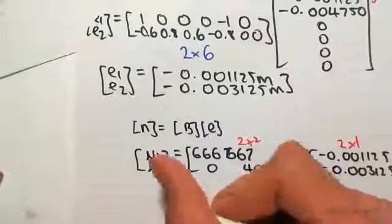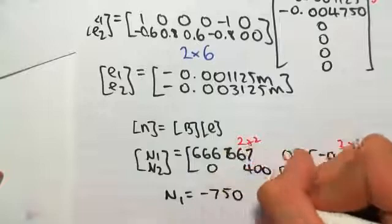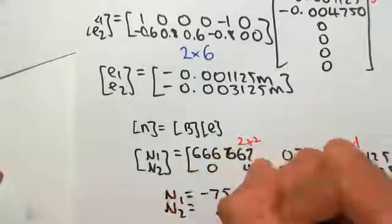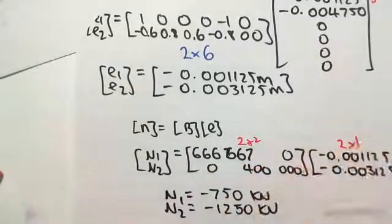So if we were to work this out, we would find that n1 would equal minus 750, and we're working in kilonewtons. So n2 would equal minus 1,250 kilonewtons.